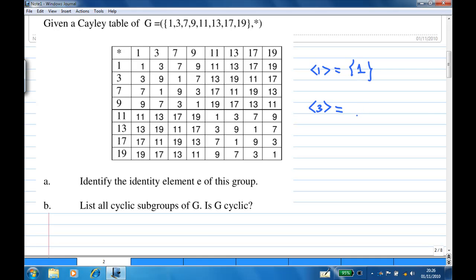Next, the cyclic subgroup generated by 3 consists of 3. Now 3 star 3, then 3 star 3 star 3, which is 9 star 3 is 7. Then 3 star 3 star 3 star 3 is 1.